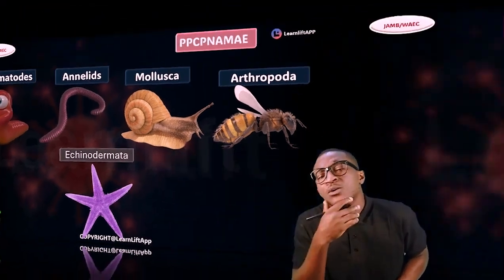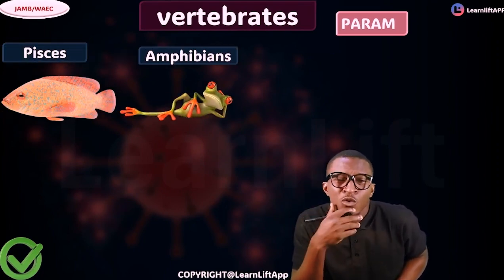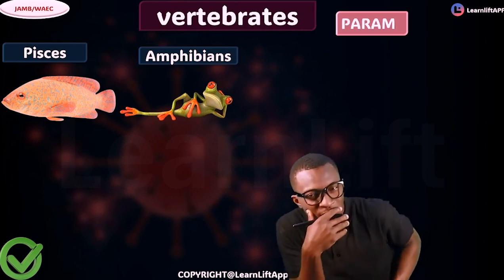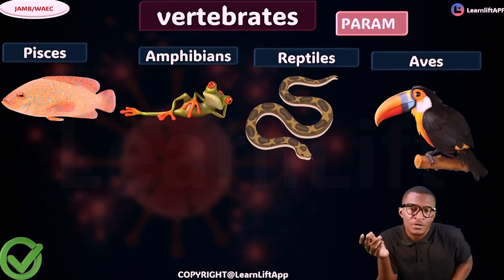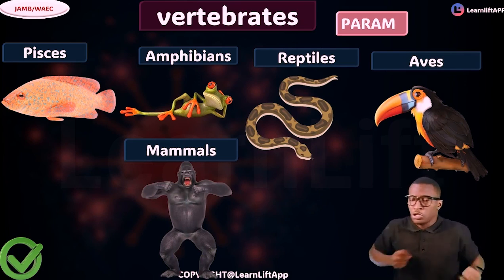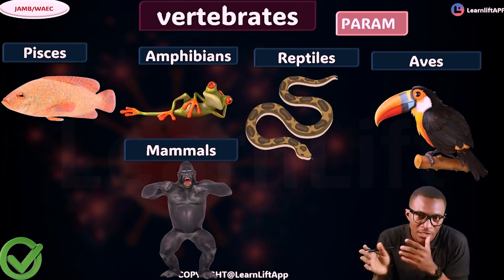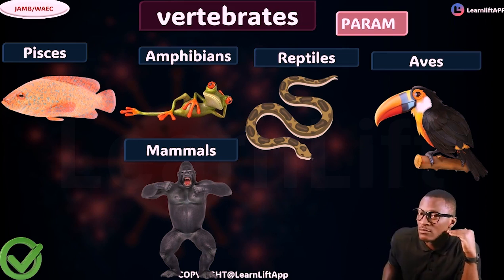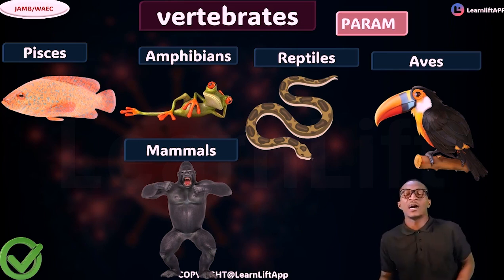Now for the vertebrates, the acronym is PARAM. First we have Pisces — your fish. Then Amphibia — you can see the toad, living both on land and water. Then Reptilia — your snakes. Then Aves — your birds. And M is Mammalia. So this is the full classification of animals based on the vertebral column — vertebrates use PARAM, invertebrates use PCP NAMIA.